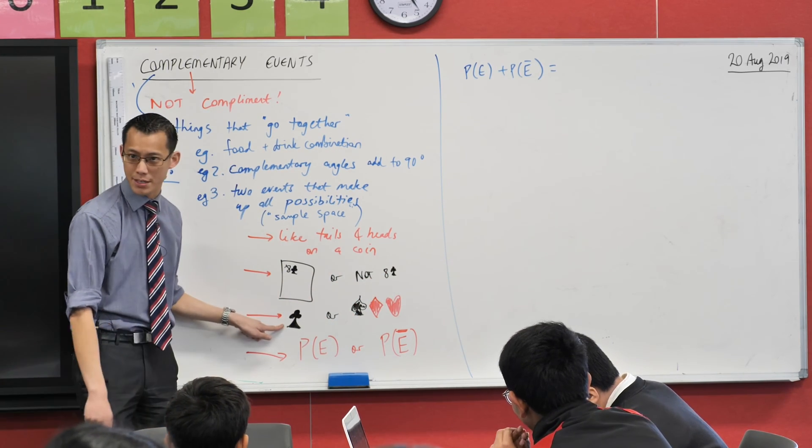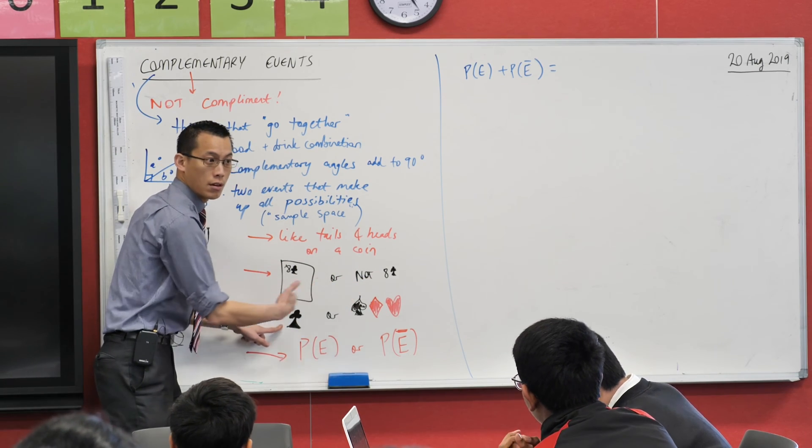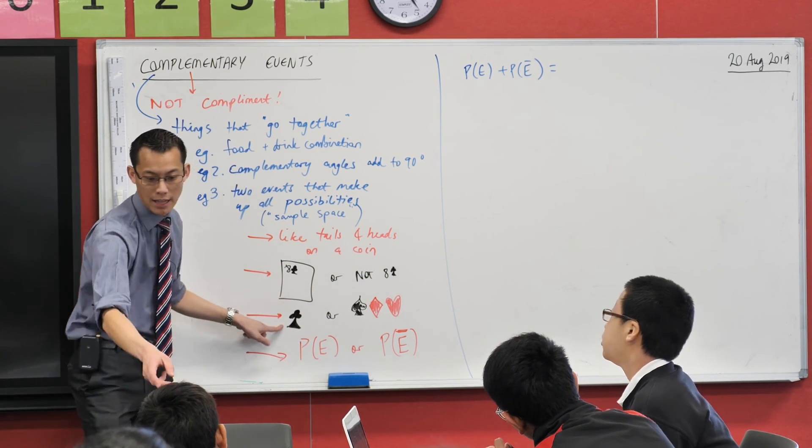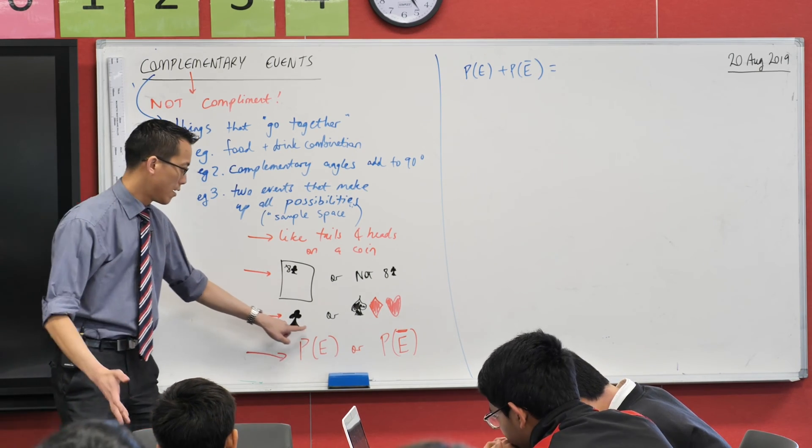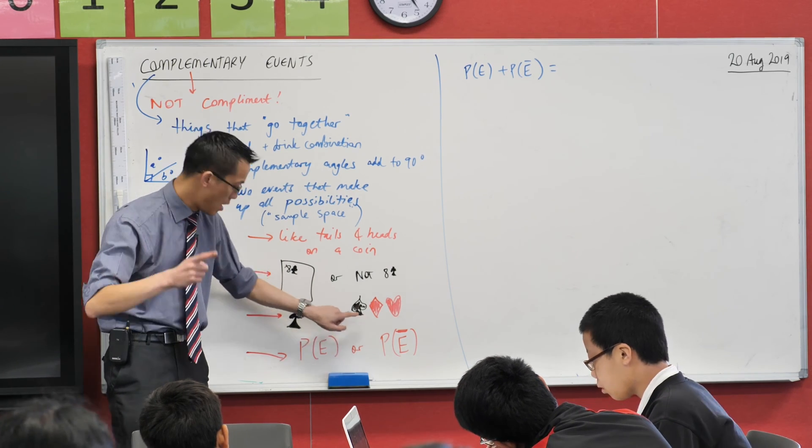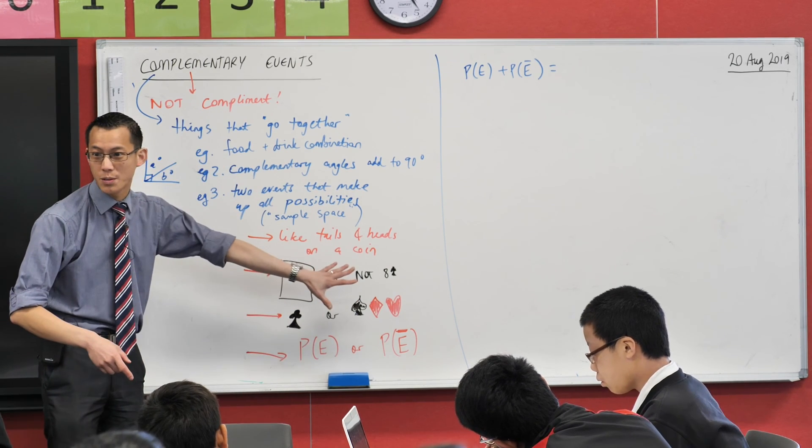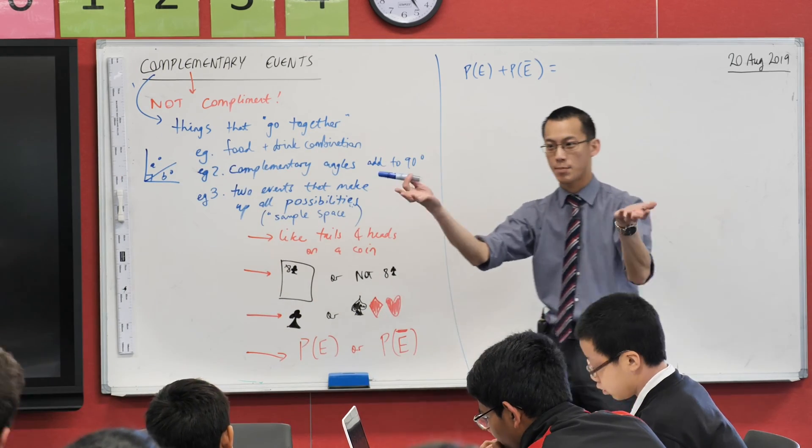Let's go to this one here. Clubs, there's one suit out of how many in total? Four, so the probability of getting clubs if I pull out a card is one quarter. Probability of the complement of that is going to be three quarters. What's a quarter plus three quarters? One.